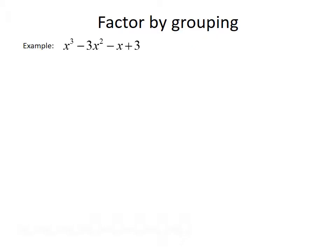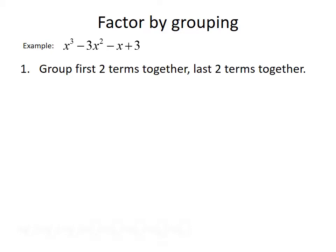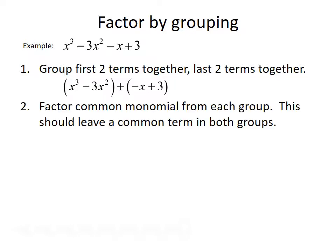Next we want to talk about a method called factoring by grouping. We'll walk through the steps while doing an example. We want to factor x cubed minus 3x squared minus x plus 3. The first step is to group the first two terms together and the last two terms together. We group x cubed minus 3x squared together, and we group negative x plus 3 together. Notice that if the third term has a negative sign, it goes inside the parentheses and we change to addition between the two groups.